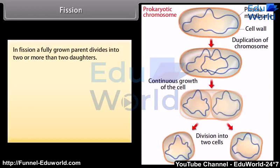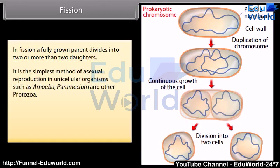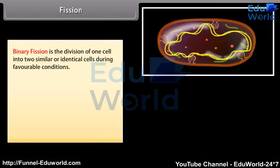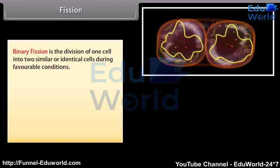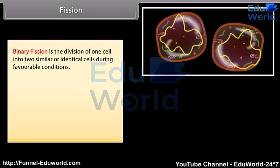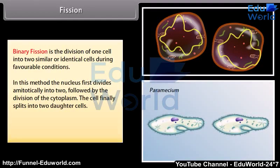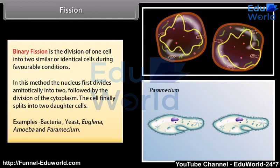In fission, a fully grown parent divides into two or more daughter cells. It is the simplest method of asexual reproduction in unicellular organisms such as amoeba, paramecium, and other protozoa. Binary fission is the division of one cell into two similar or identical cells during favorable conditions. The nucleus first divides ameitotically into two, followed by division of the cytoplasm, and the cell finally splits into two daughter cells. Examples include bacteria, yeast, euglena, amoeba, and paramecium.